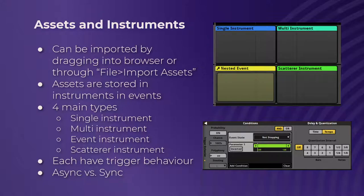Two more slightly less common but still fairly commonly used types: event instruments basically just hold another event. You drag an event out of the events browser and drop it into a different event, and it will create either a nested event or a referenced event. It's great for organization if you want to play one event within another. You can also choose to cut it off — it plays, you hit the cut button, and whenever it ends in the current timeline, that's where the event will cut off.